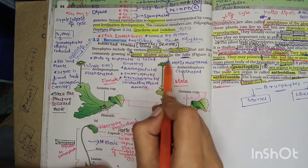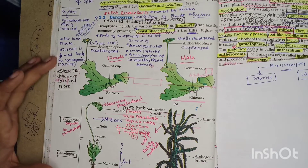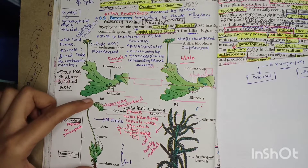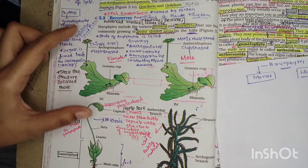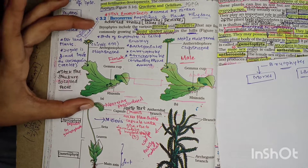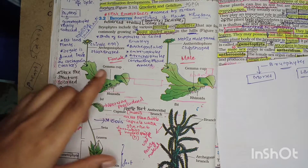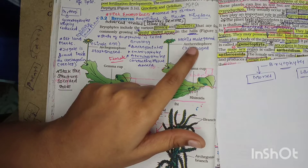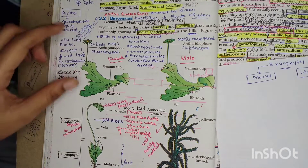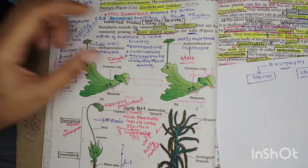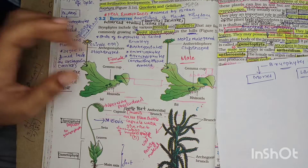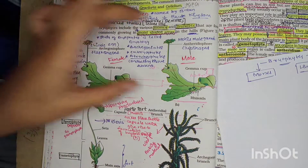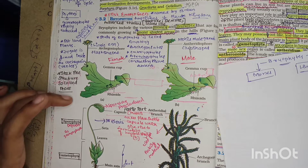There are some pictures given in the NCERT. This is a liverwort and this is a moss. Liverworts - an example is Marchantia. This is the male Marchantia and this is the female Marchantia. I am distinguishing by the presence of archegonia which are female gametes and antheridium which are male gametes. Here you can also see Funeria, which is a moss.